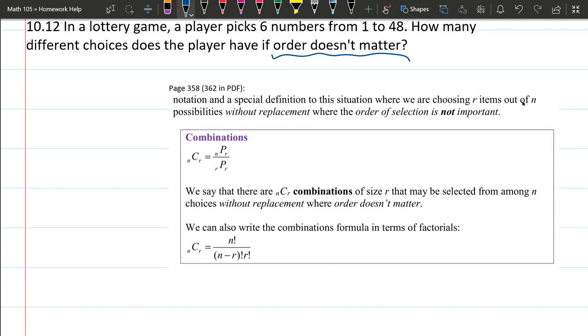In the textbook, page 358 in the printed book or 362 in the PDF, they talk about combinations, which are without replacement where order is not important. The original problem doesn't say there's no replacement, but the way lotteries work is you're picking numbers out of a container with only one of each number, so lotteries are without replacement.